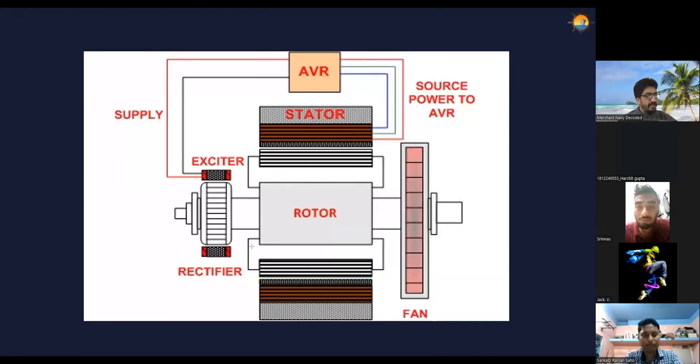Can you see the screen again? So the question Srinivas is asking is when the generator is in stopped condition, we do not have any output. When we don't have any output, then we don't have any output coming from AVR. No DC current is going to exciter. Then how come this becomes electromagnet?